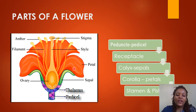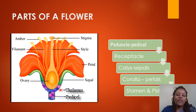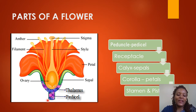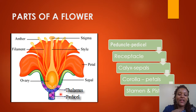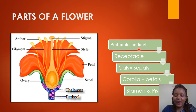Then we have the petal — this very attractive, very colorful part in most flowers. Then we have the sepal — normally green in most flowers. Then we have the thalamus, also called the receptacle. And then we have the pedicel — the part that you hold using your hand when you hold a flower.